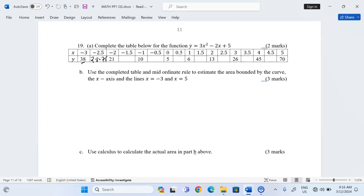Then we skip negative 2, which is already calculated, to negative 1.5, and that will give us 14.75. Then at negative 0.5, we'll have 6.75. Then at 0.5, we shall have 4.75.